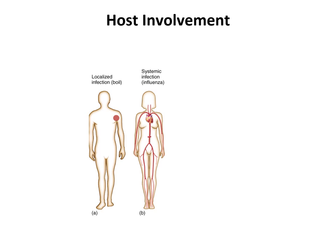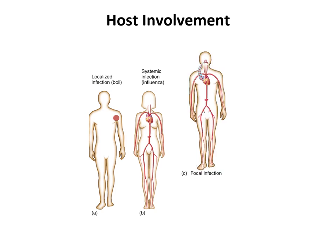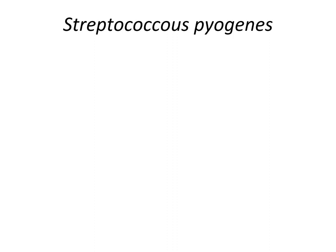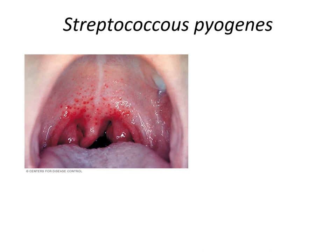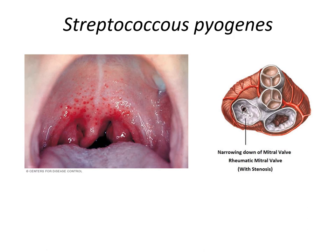A focal infection is where the infection starts in one place and travels to a specific second location. The best example is caused by Streptococcus pyogenes, which causes strep throat and scarlet fever. You inhale it, it causes an infection in the throat — strep throat — and if untreated, it can move to the heart and affect the valves. So it starts in the throat and then moves specifically to a second location: that is a focal infection.